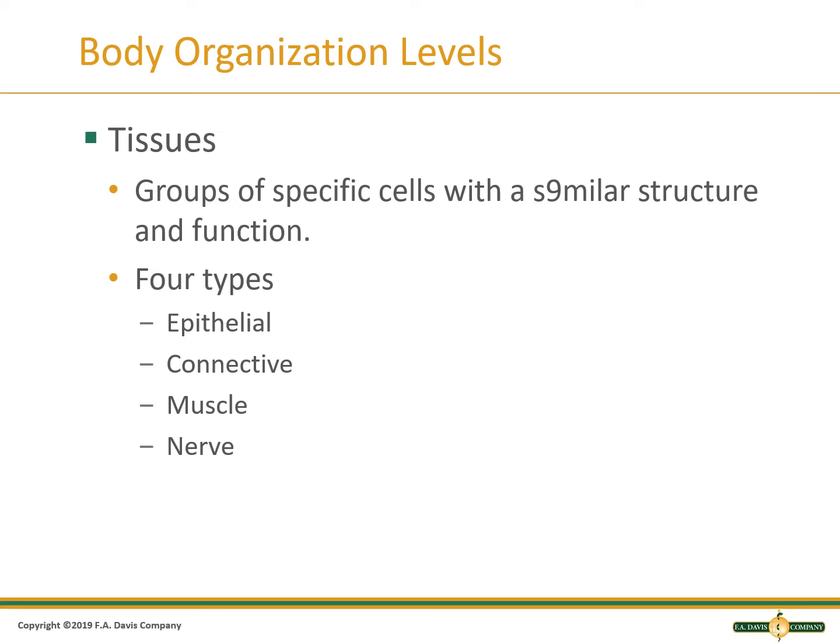Connective tissue is blood, bone, and cartilage, and adipose cells that connect tissues and organs and provide a support network for organs. Blood is a connective tissue that you will be collecting routinely as a phlebotomist.